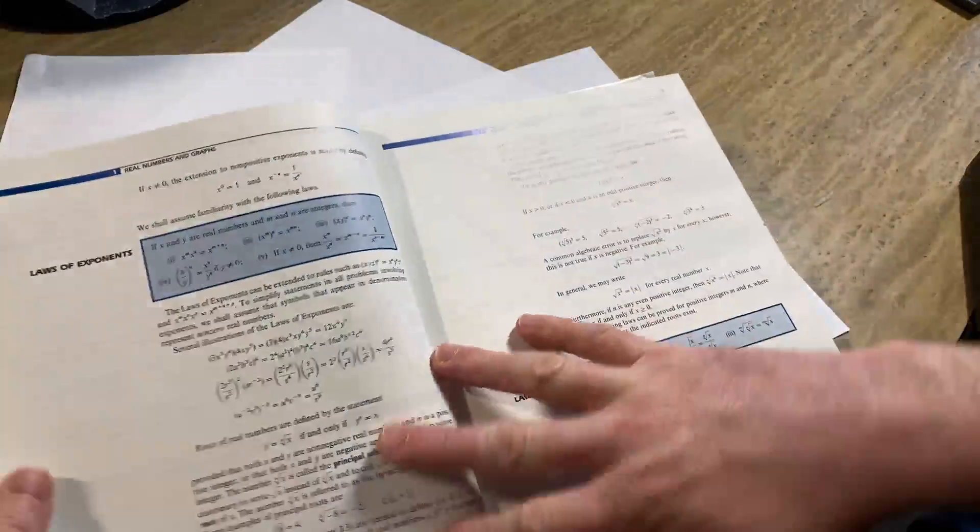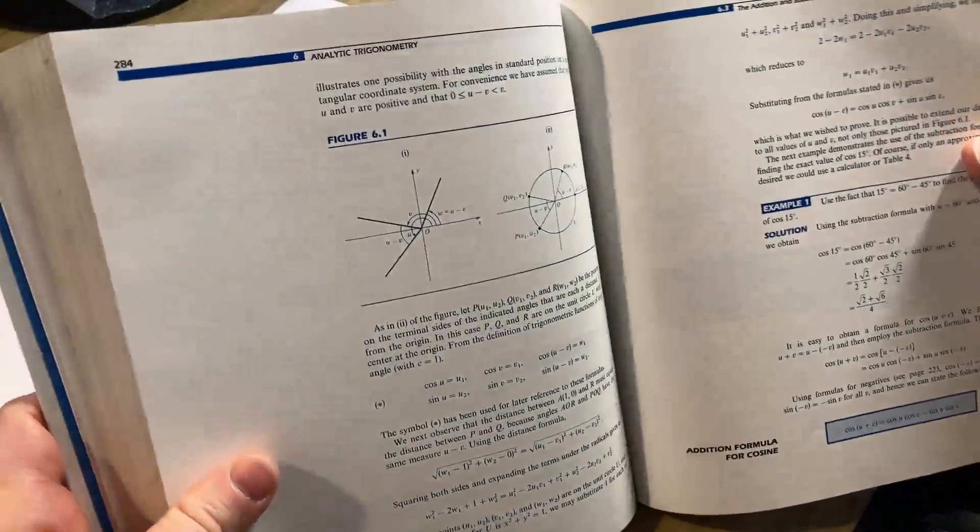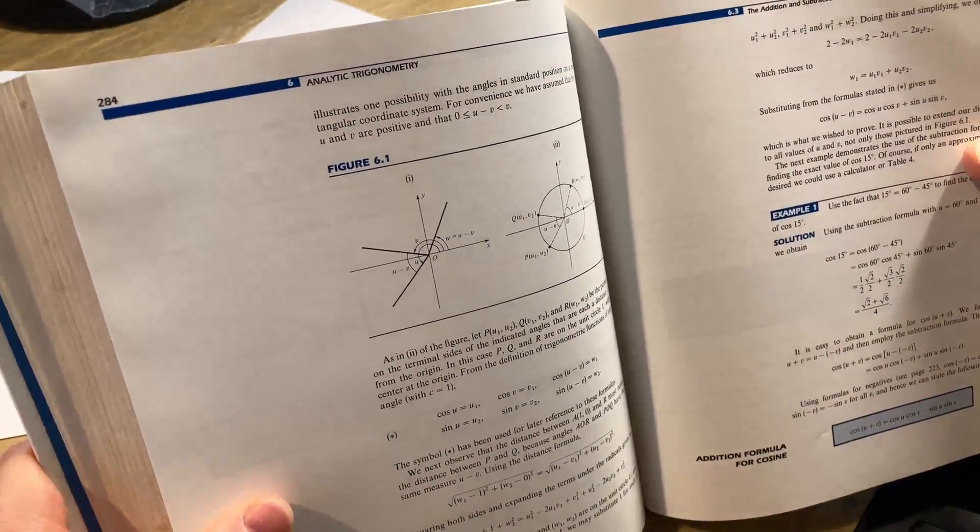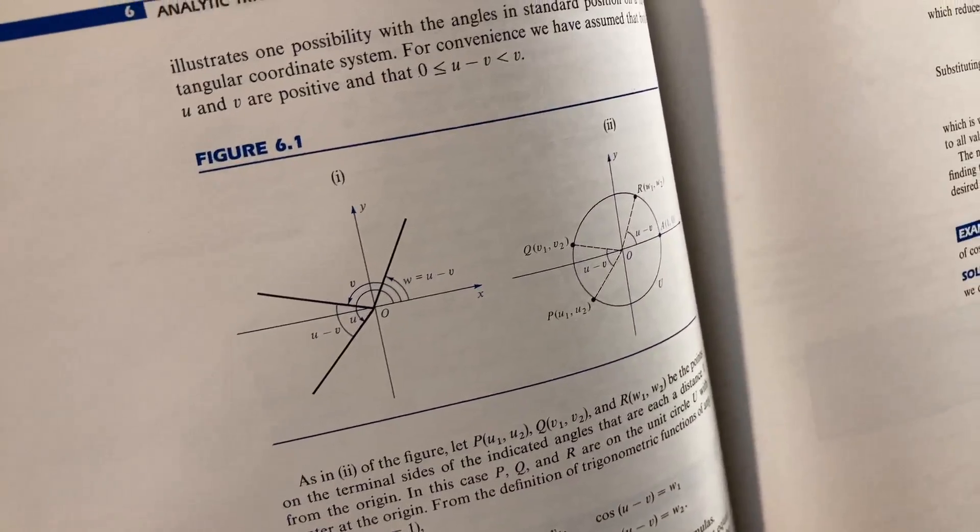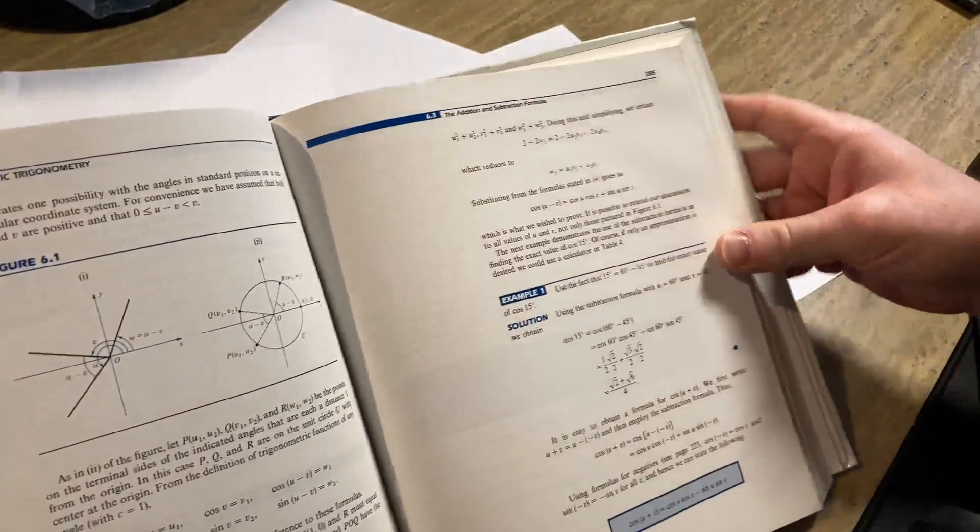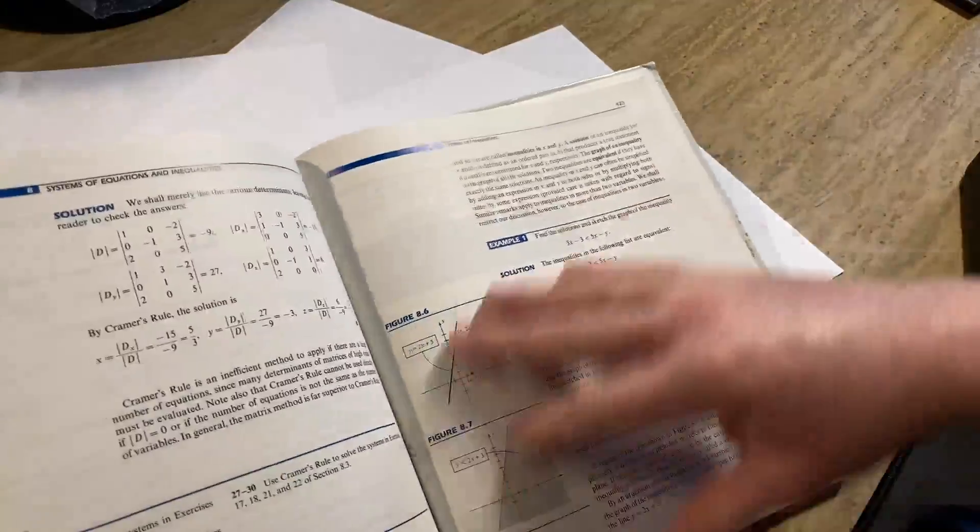Let's just open up to a random page. We can look at it. See what we have here. Analytic trigonometry, Figure 6-1. Got some images there. Jump to something else.